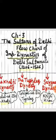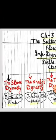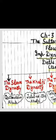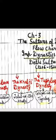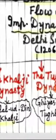Now we will discuss five dynasties. The first dynasty is the Slave dynasty, which was founded by Qutb-ud-Din Aibak. The second dynasty is the Khalji dynasty, which was founded by Jalal-ud-Din Khalji.